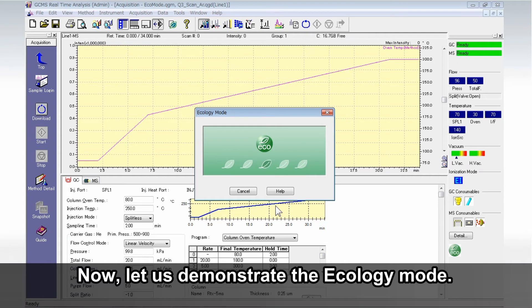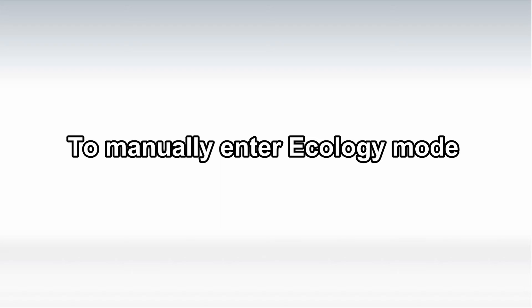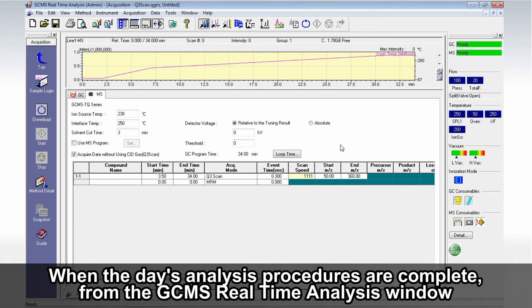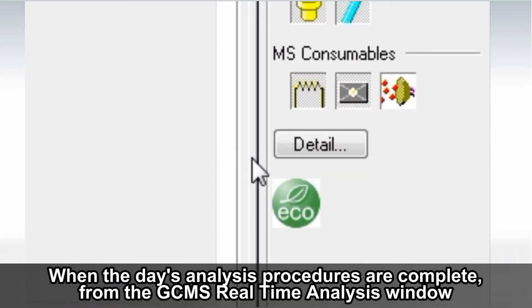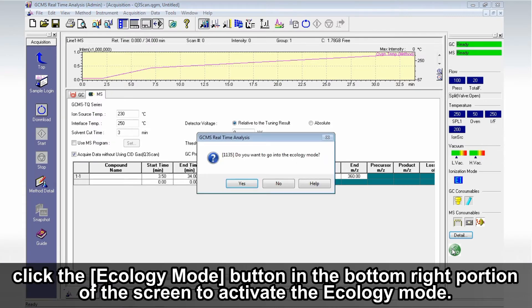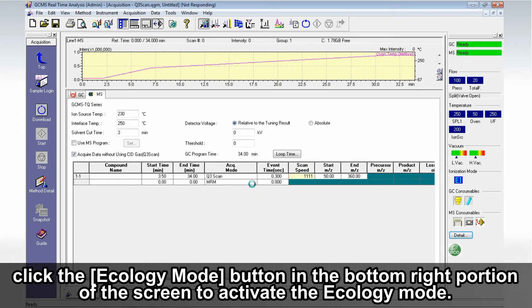Now, let us demonstrate the Ecology Mode. When the day's analysis procedures are complete, from the GC-MS real-time analysis window, click the Ecology Mode button in the bottom right portion of the screen to activate the Ecology Mode.